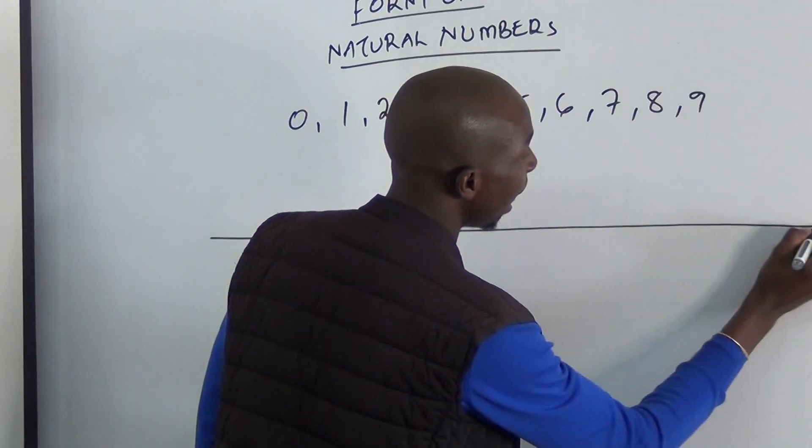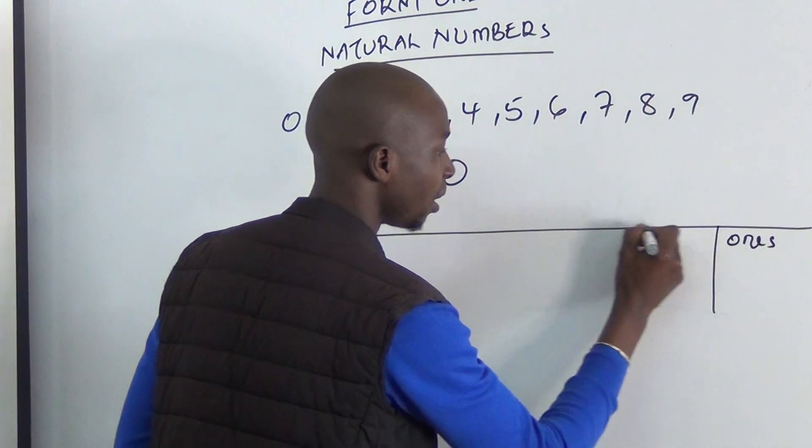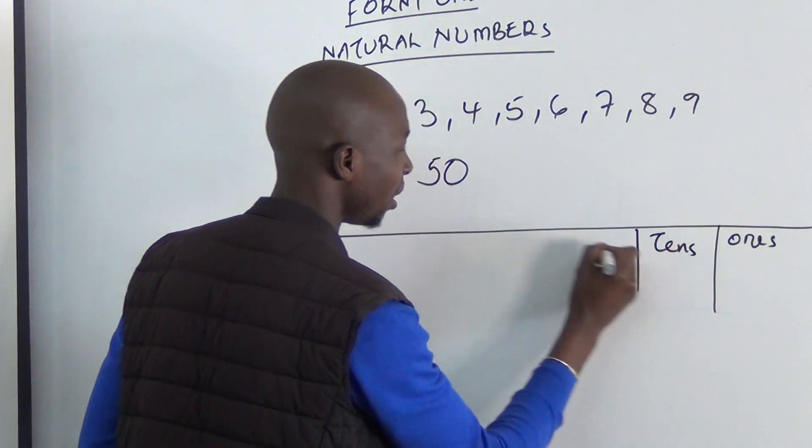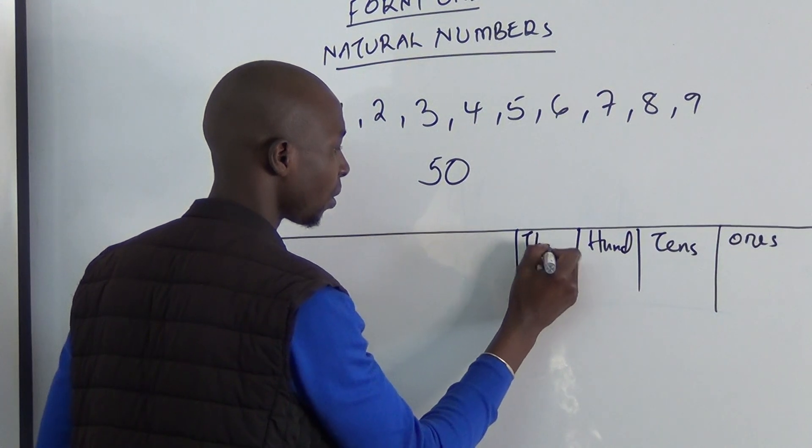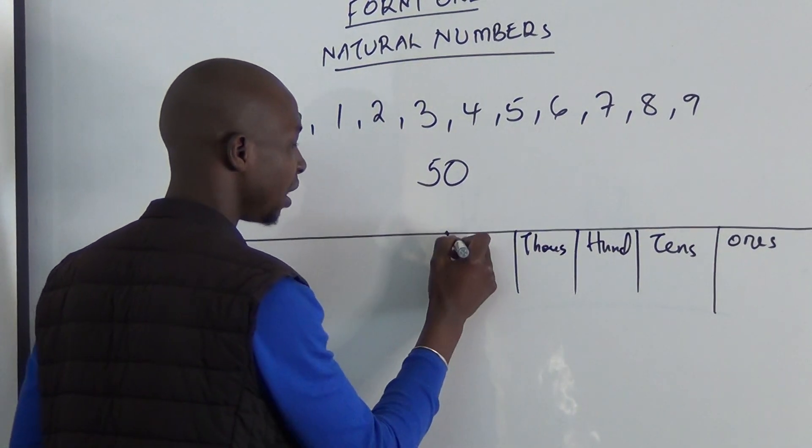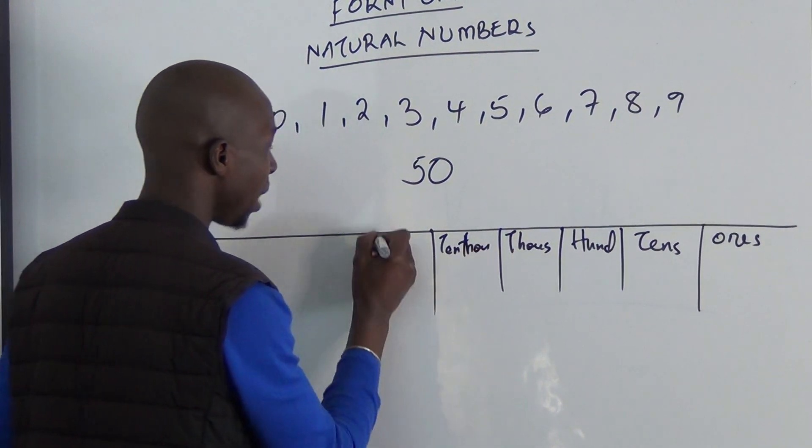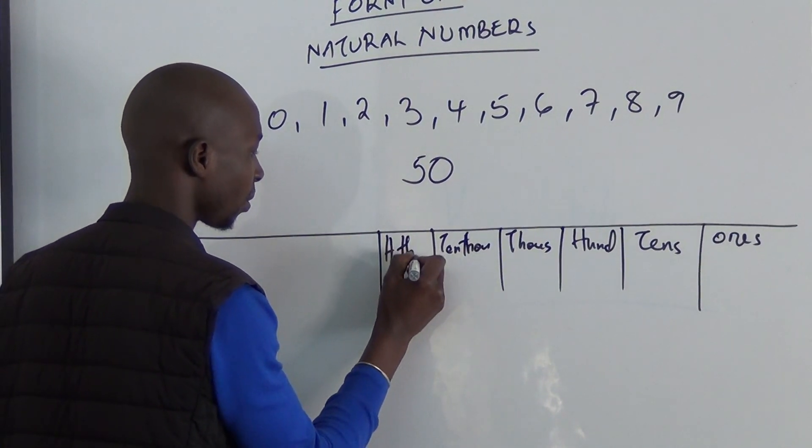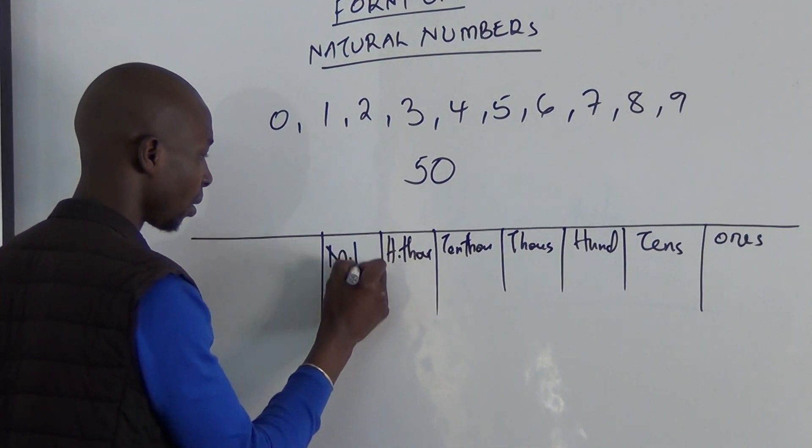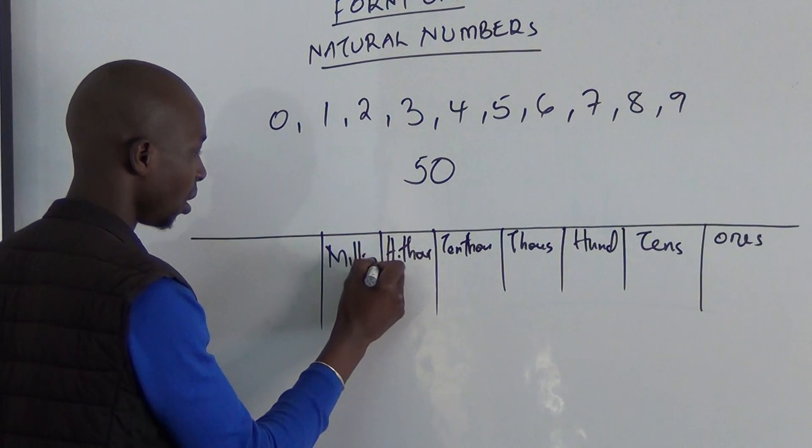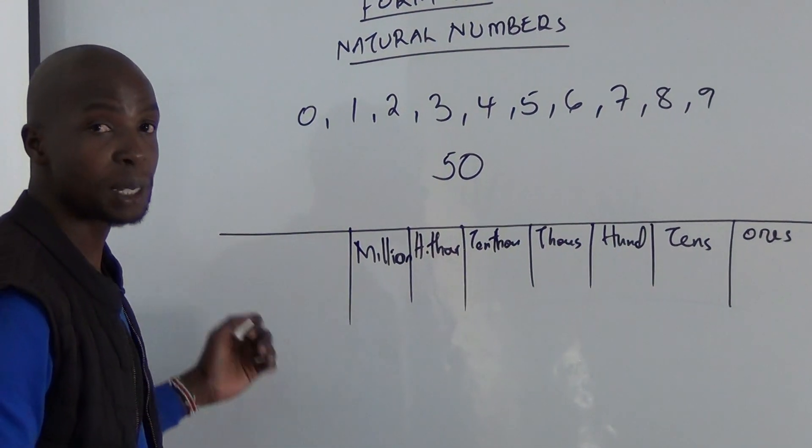10, 100, 1000, then we have 10,000, then we have 100,000, then we have 1,000,000. It goes and goes, tens of millions, hundreds of millions, and billions.